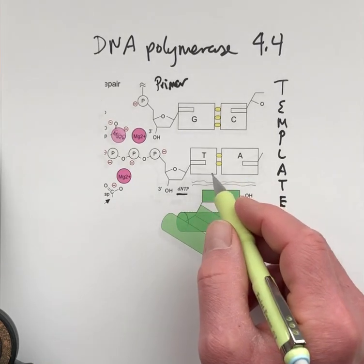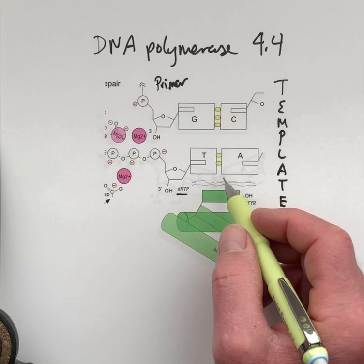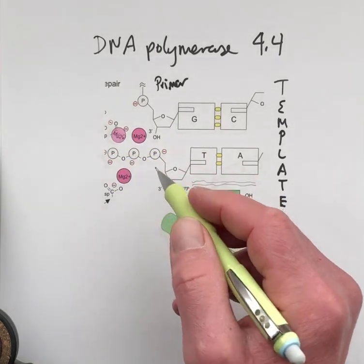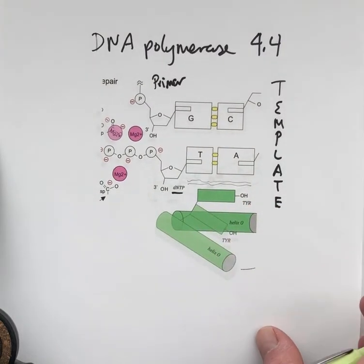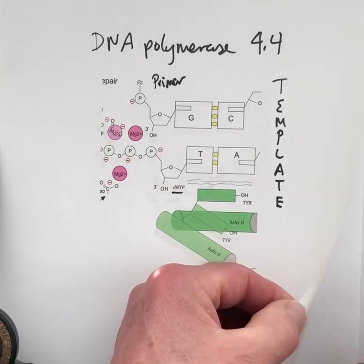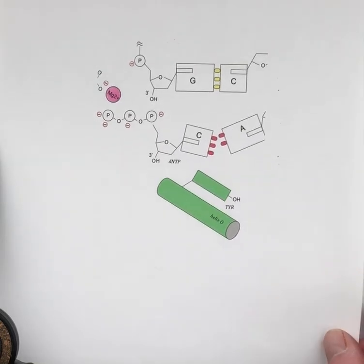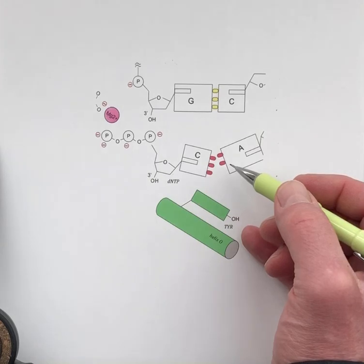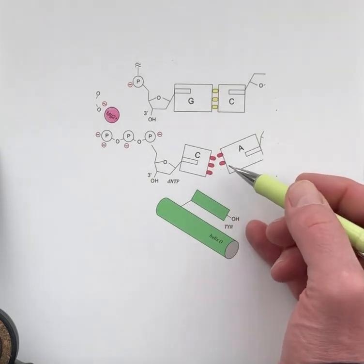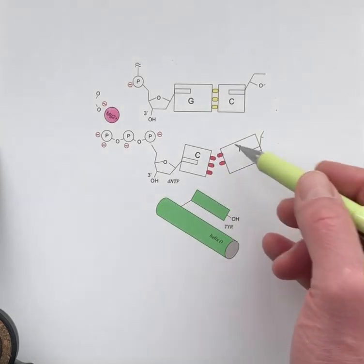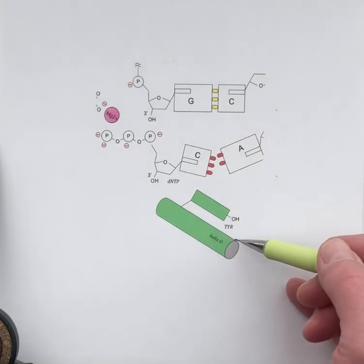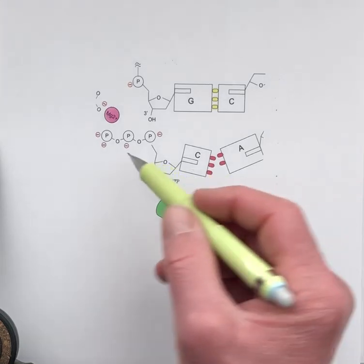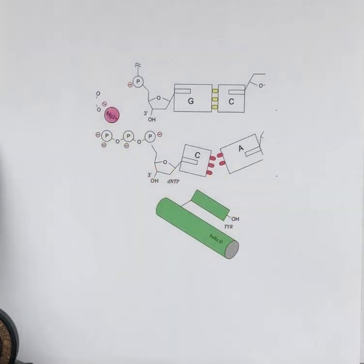The O-helix moving into position makes favorable van der Waals interactions between the tyrosine residue and the newly forming base pair, and that gives the green light for chemistry to happen, catalyzed by the metal ions. In the next picture we'll see the situation when there's a mismatch between the base pairs — this structural defect prevents the O-helix from going completely into position and therefore chemistry is not catalyzed.